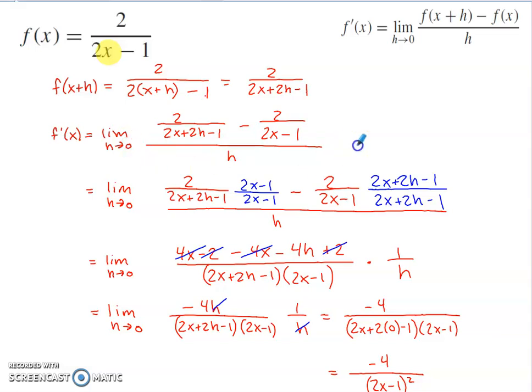Now what will happen anytime you build this limit is if you put 0 in place of the h's, you are always going to get 0 divided by 0. That is an indeterminate form that we need to try to get past.